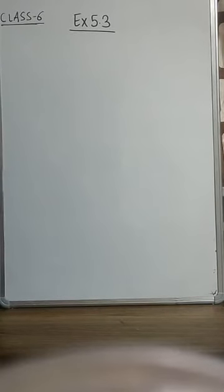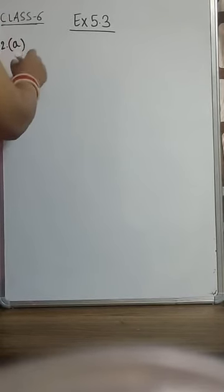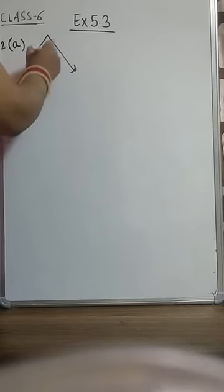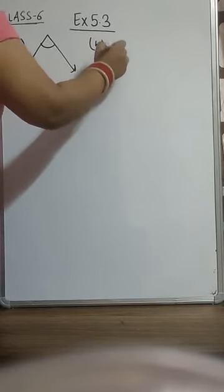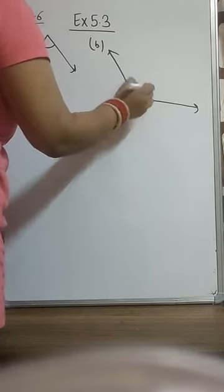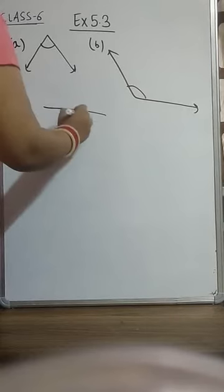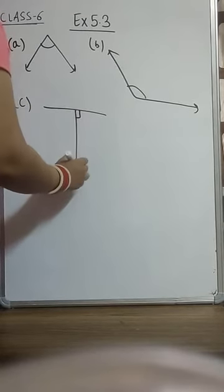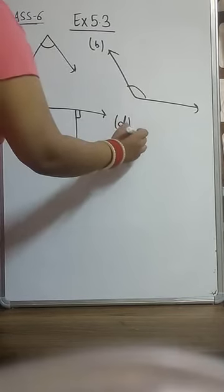In question number 2, we have to classify each of the given angles. In part A, an angle like this is given. In part B, a kind of angle like this is given. In part C, you can see this angle is given. In part D, you can see this angle is given.